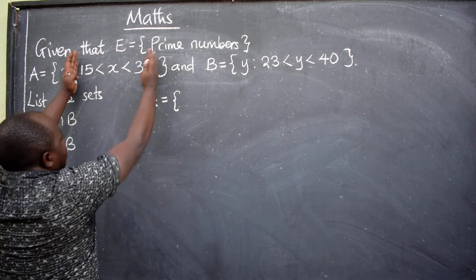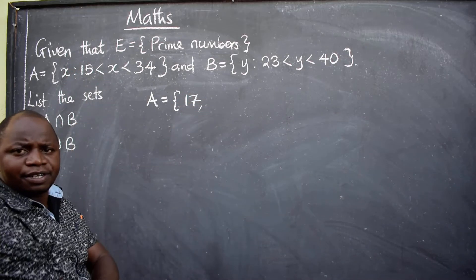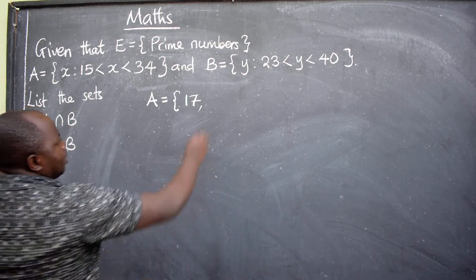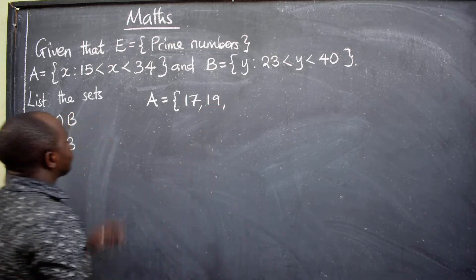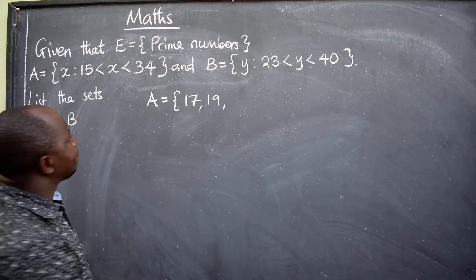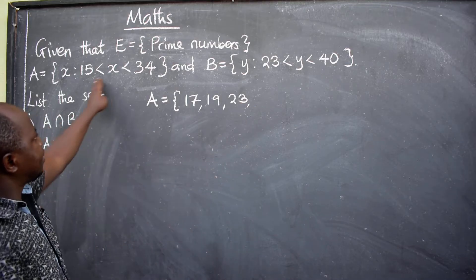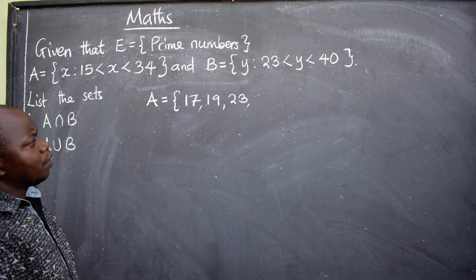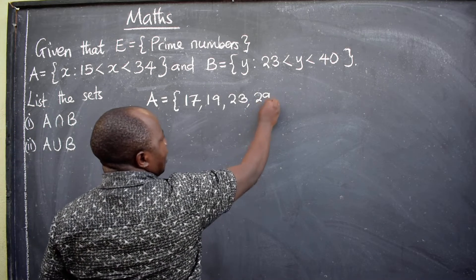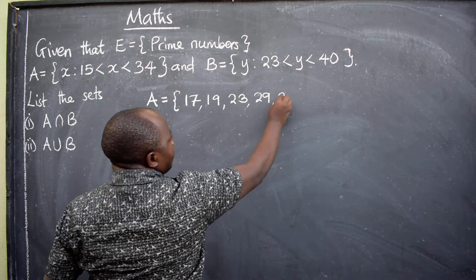Prime numbers within this range. The first one will be 17. Agreed? 17 has got only two factors, 1 and 17. What will be the next one? 19. Between 15 and 34. What will be the next number? 23. That will be the next number. What will be next? 29. Agreed? What will be the next number? 31.